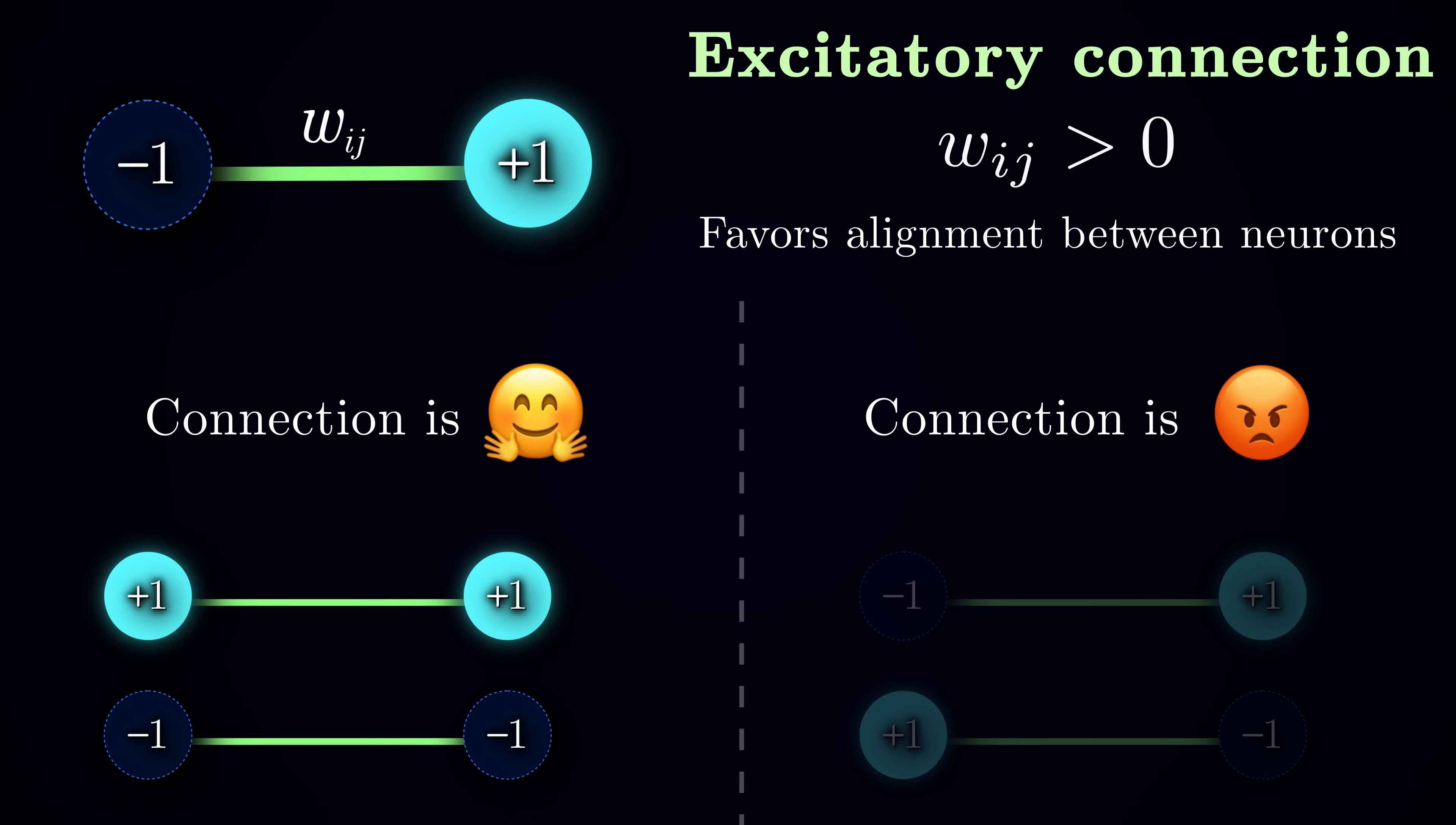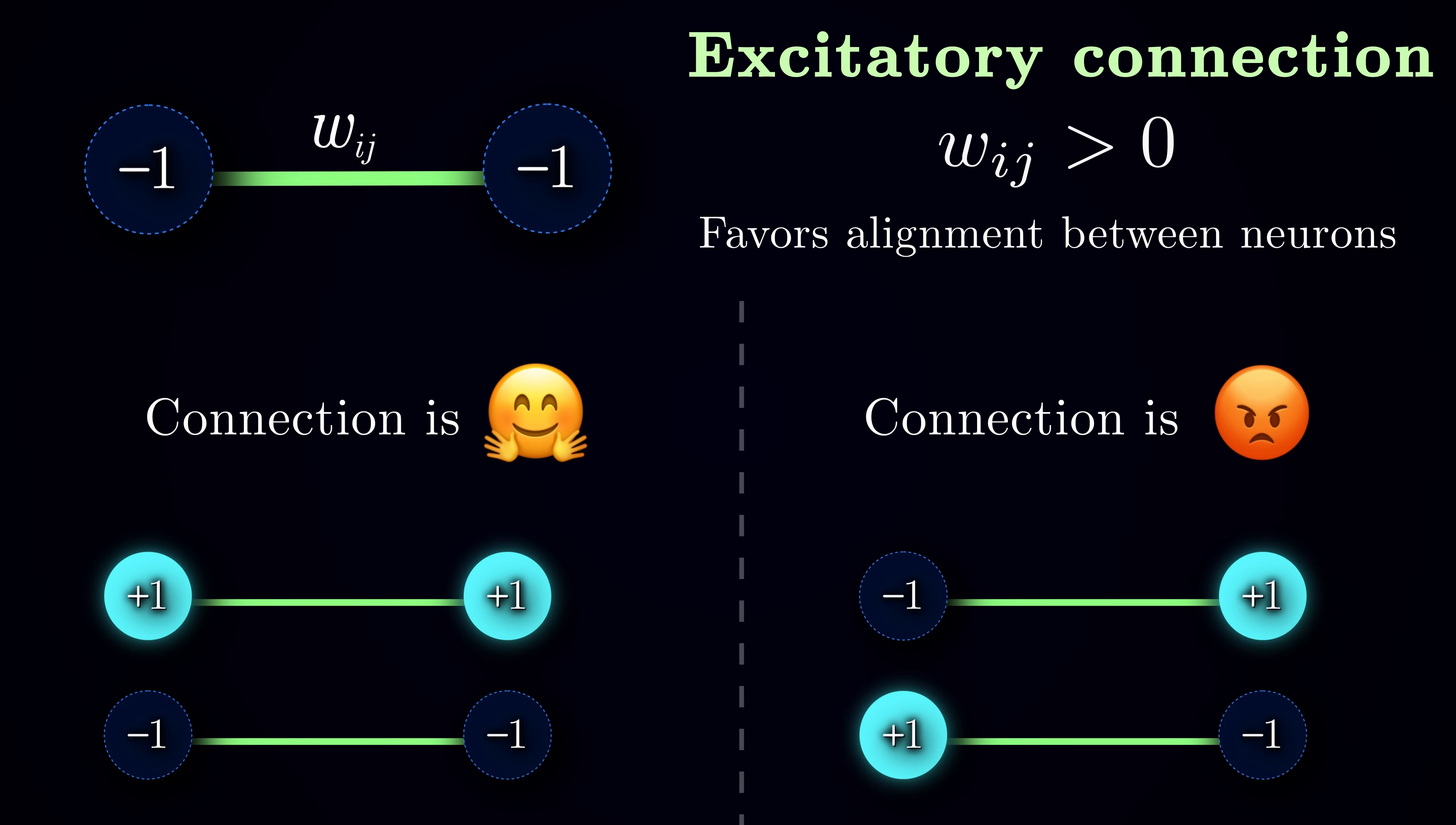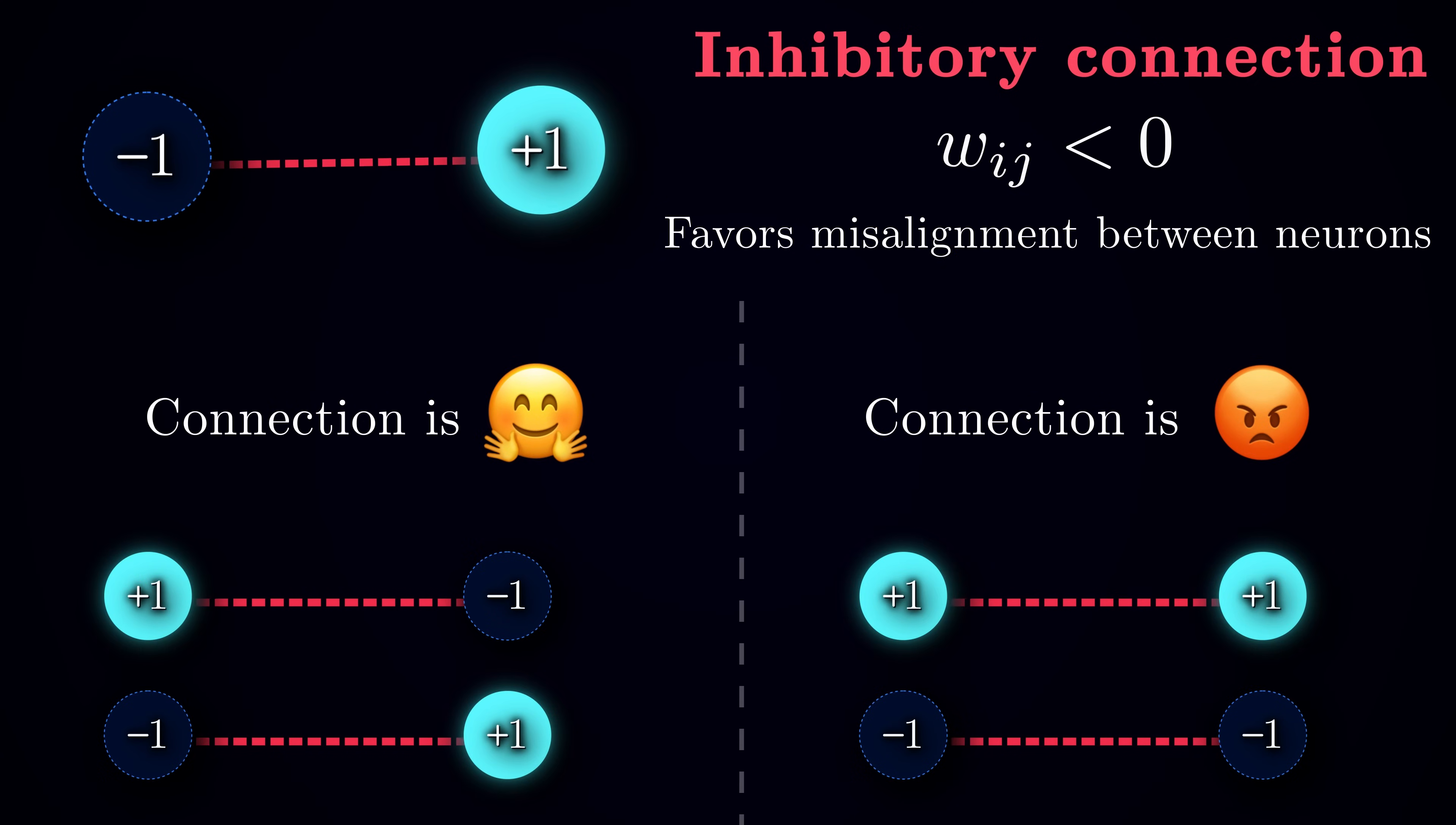For example, if wij is a large positive number, it means that neurons i and j are closely coupled and one excites the other. In this case, when one neuron is active, the other tends to be active as well. And when one is silent, the other one is more likely to be silent. These configurations, where both xi and xj are either 1 or minus 1, agree with the connection weight. However, if we observe that xi equals 1 and xj equals minus 1, it conflicts with the excitatory nature of the connection. Conversely, when wij is negative, the connection promotes misalignment between the weights.